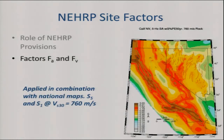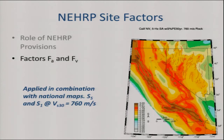An important detail: these factors are combined with the USGS maps, and those maps are defined in modern times for a very specific site condition — 760 meters per second. So in the original NGA models, when USGS developed the maps, they plugged in a VS30 of 760.